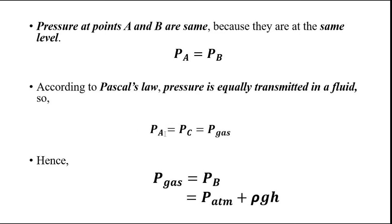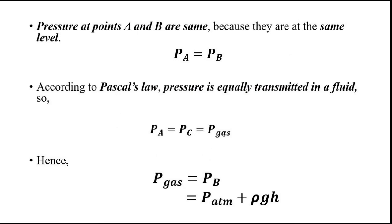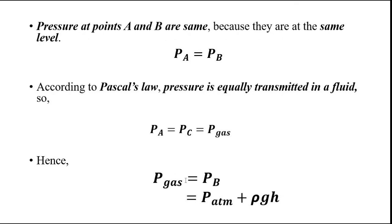Different laws are being used to design this whole setup so that we can measure the gas pressure. Because of Pascal's law, pressure at point A is equally transmitted to point C, meaning P_A = P_C, which is the gas pressure. Now P_A = P_B since they are at the same level, and P_B = P_atm + ρgh.